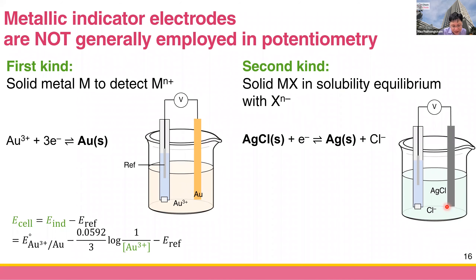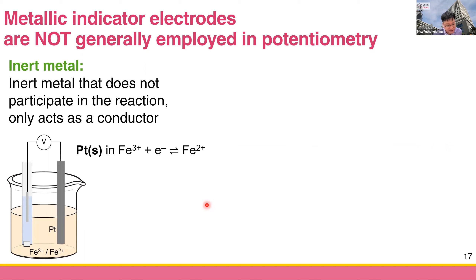The second kind metallic indicator electrode uses a solid salt MX in solubility equilibrium with the X ion. For example, if you want to measure the concentration of chloride, you may use a silver chloride electrode — a solid silver chloride salt mixed with silver. So you want to measure chloride (which is X) and you use the solid MX, which is silver chloride. This is the electrode of the second kind, and the mathematics is something you've already done, so we won't spend time on it.